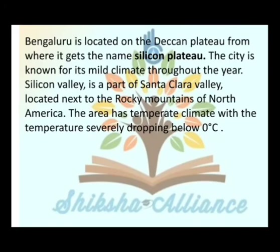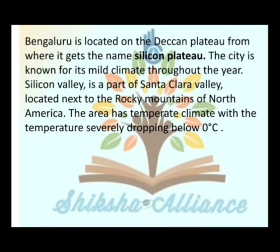Bangalore is located on the Deccan Plateau, from where it gets the name Silicon Plateau. The city is known for its mild climate throughout the year. Silicon Valley is a part of Santa Clara Valley, located next to the Rocky Mountains of North America. The area has a temperate climate, with temperatures rarely dropping severely below 0 degrees Celsius.